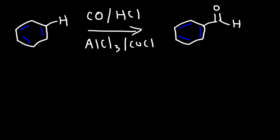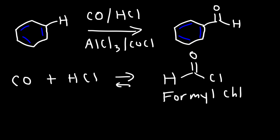Now, in the first step, carbon monoxide reacts with hydrochloric acid reversibly to produce an unstable acid chloride. This acid chloride is called formyl chloride.